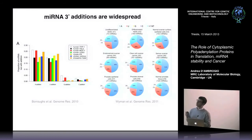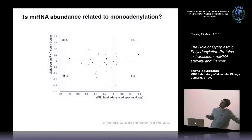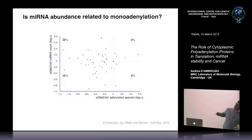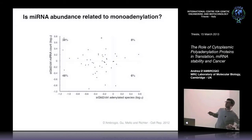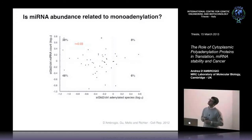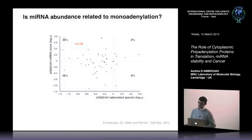I wanted to know if monoadenylation is important for microRNA stability and quantity in cells. Comparing the amount of microRNA on the y-axis and the adenylated species on the x-axis, the relationship between the two upon GOLD2 knockdown was non-existent, which worried me. But this experiment doesn't account for other possible effects of GOLD2 knockdown — it could regulate translation of many proteins, and GOLD2 might regulate each step of microRNA biogenesis from pri- to pre-microRNA, export, Dicer cleavage, and loading into AGO.